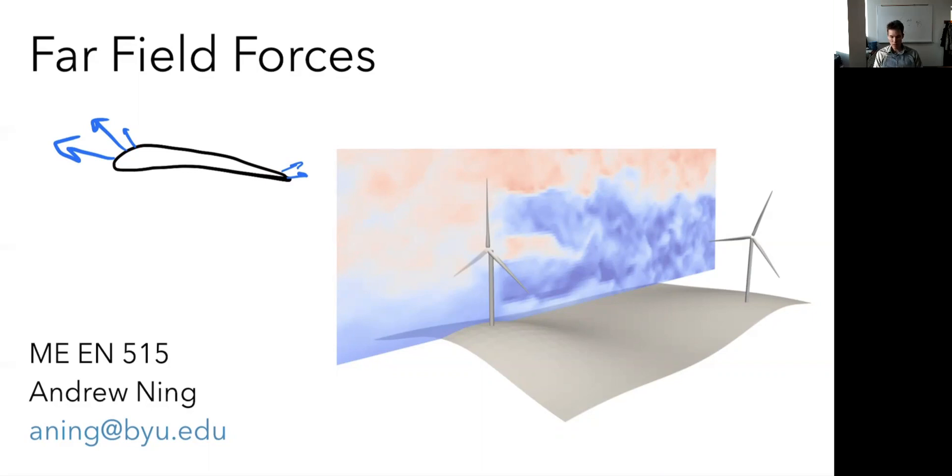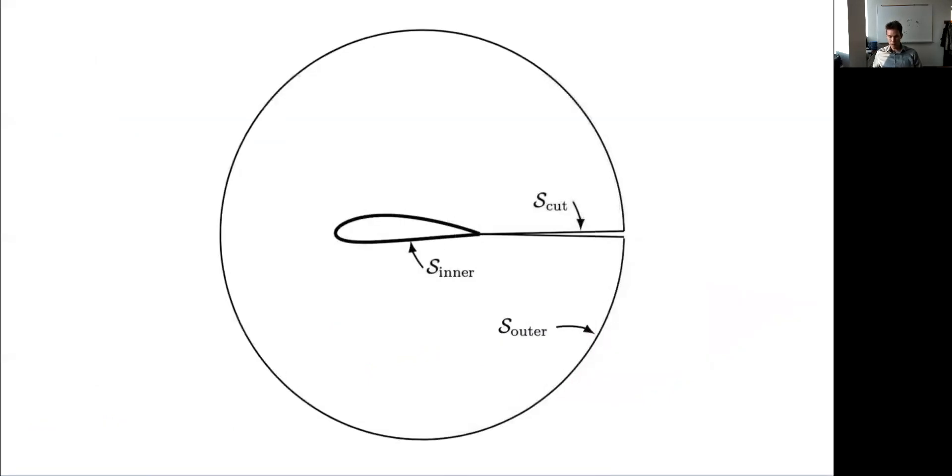That motivates why we might want to use far field properties. We'll show how we can apply a body inside of a control volume. Here's an example. I've got a domain on the outside, a control volume. In this case, it looks circular. It doesn't really matter what the shape is.